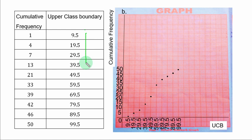Which means 1 line is 1 unit. And on the upper class boundary axis there is no special scale. You start from the first upper class boundary 9.5 to the last one 99.5.